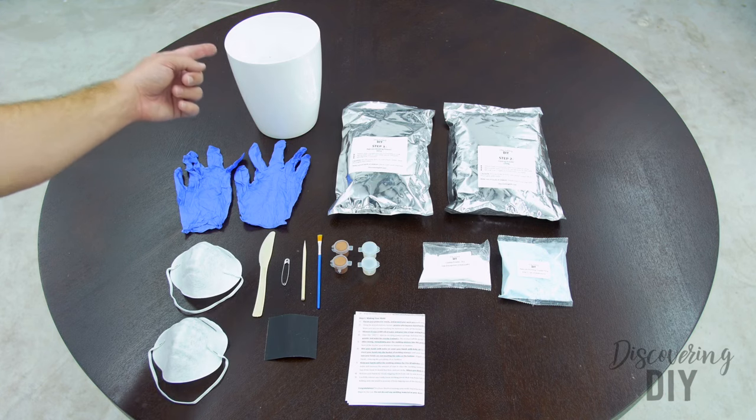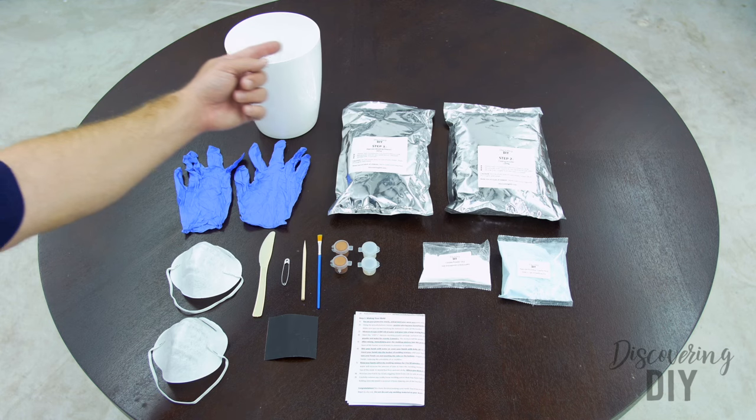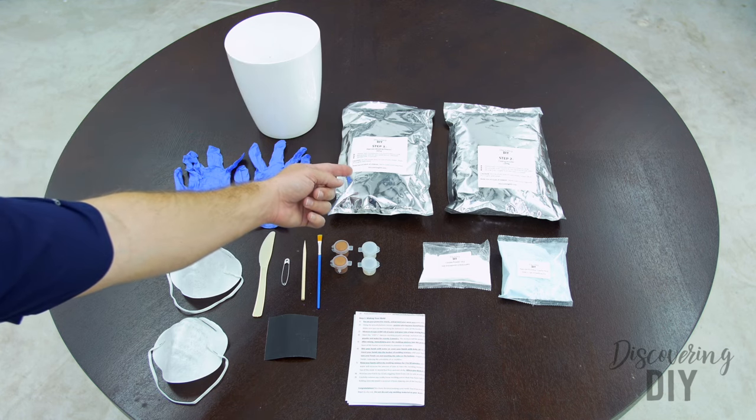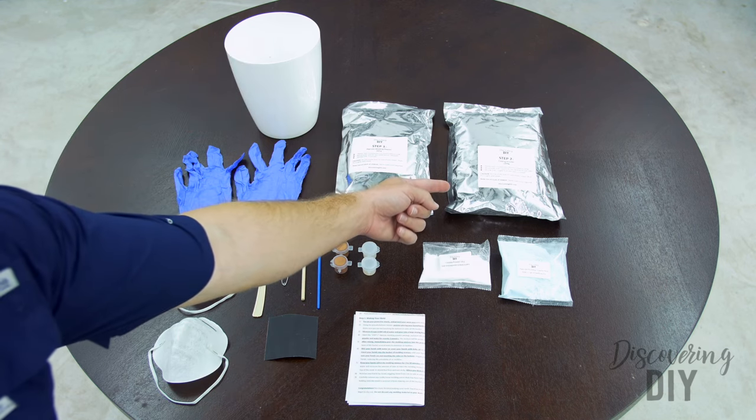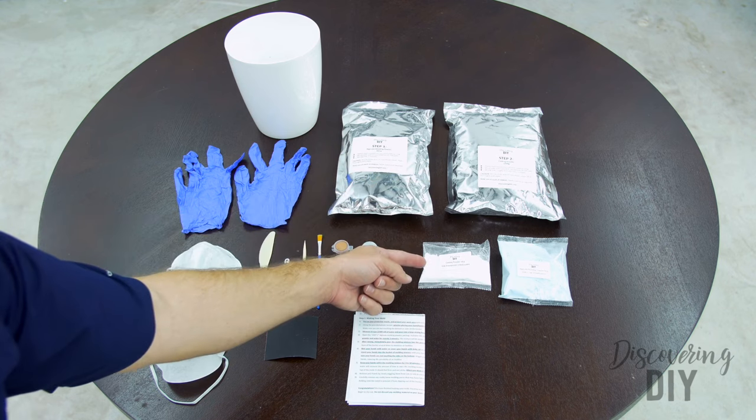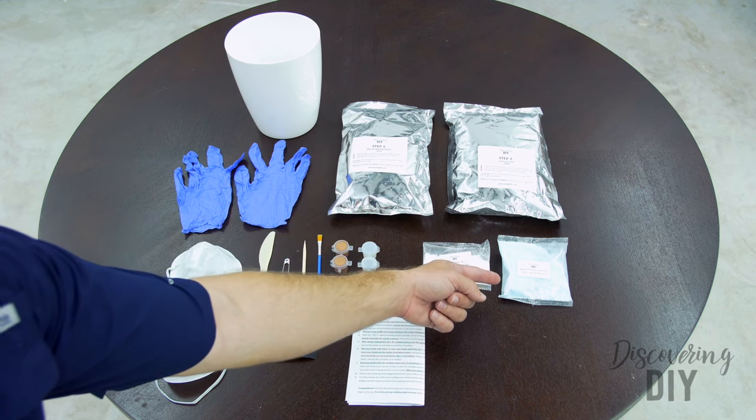Inside the box, we have a large hand casting bucket, Step 1 Alginate Molding Powder, Step 2 Casting Powder, Practice Casting Powder and Practice Molding Powder.